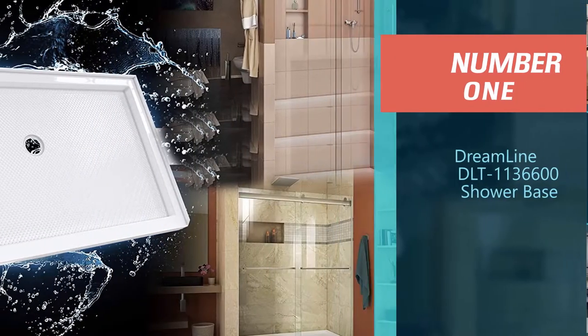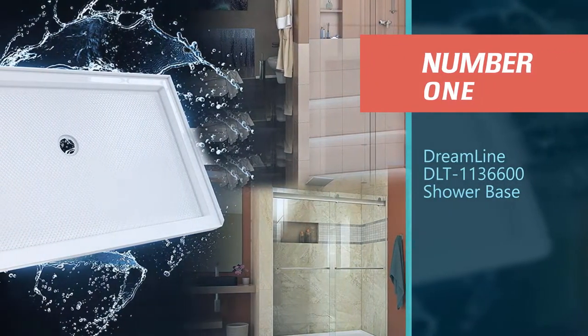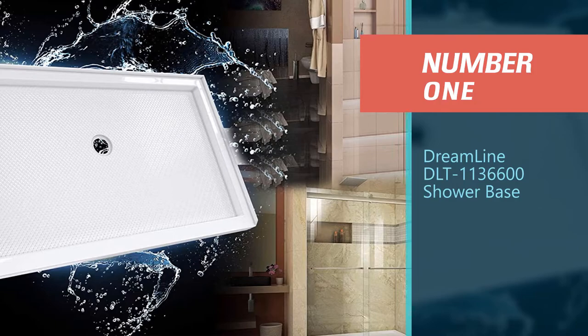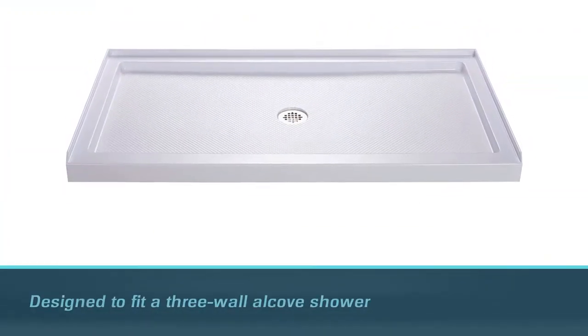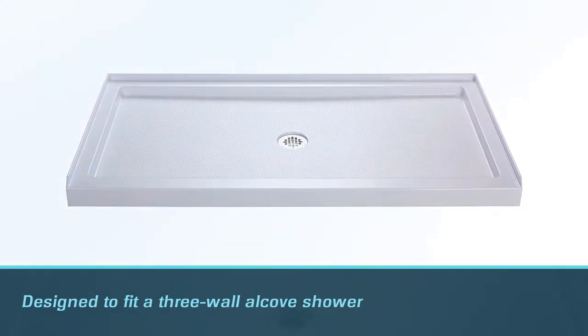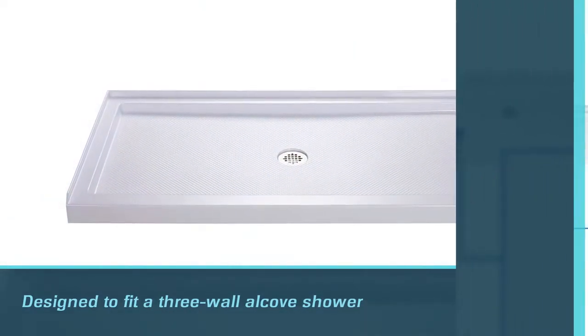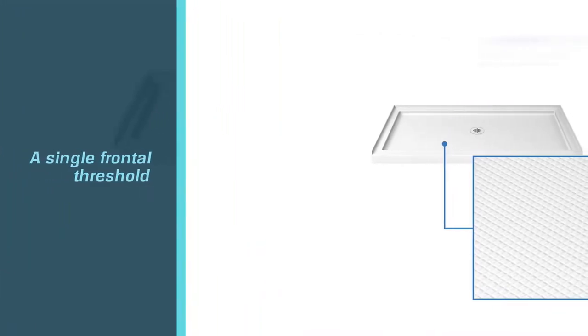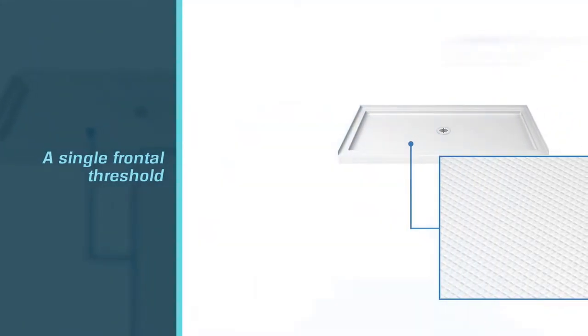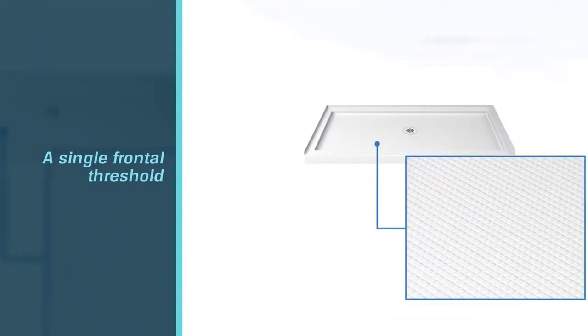Number one, most popular: Dreamline DLT 1136600 Shower Base. This base is designed to fit a three-wall alcove shower and features a single frontal threshold. It comes with either a right, left or central opening to install a 2-inch drain.